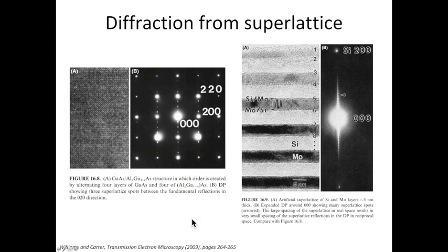The structure is quite interesting. We have four layers of gallium arsenide, then four atomic layers of aluminum gallium arsenide. And this kind of structure alternates, leading to the superlattice.